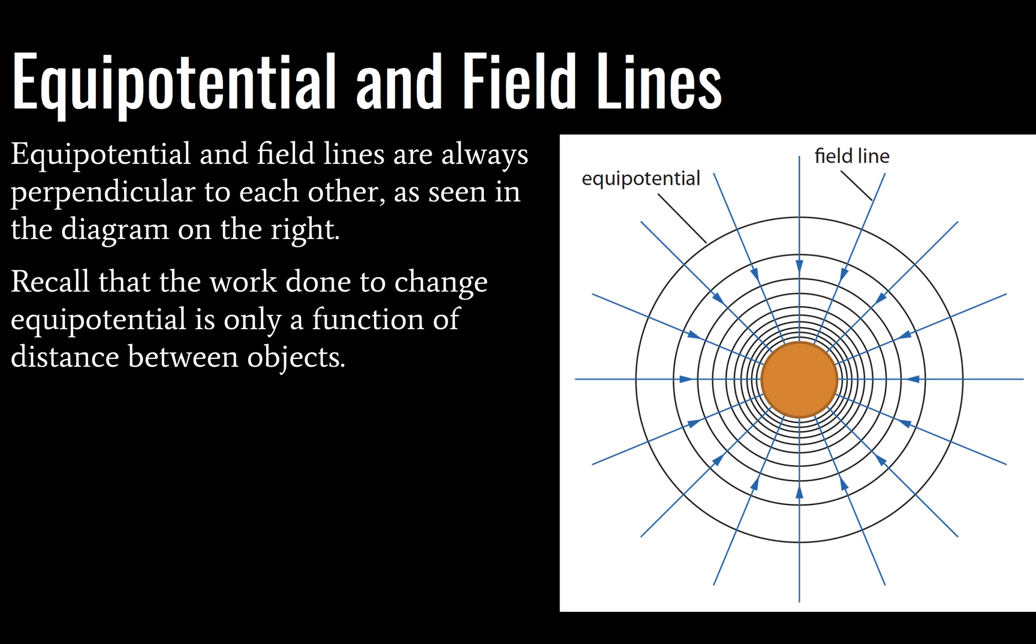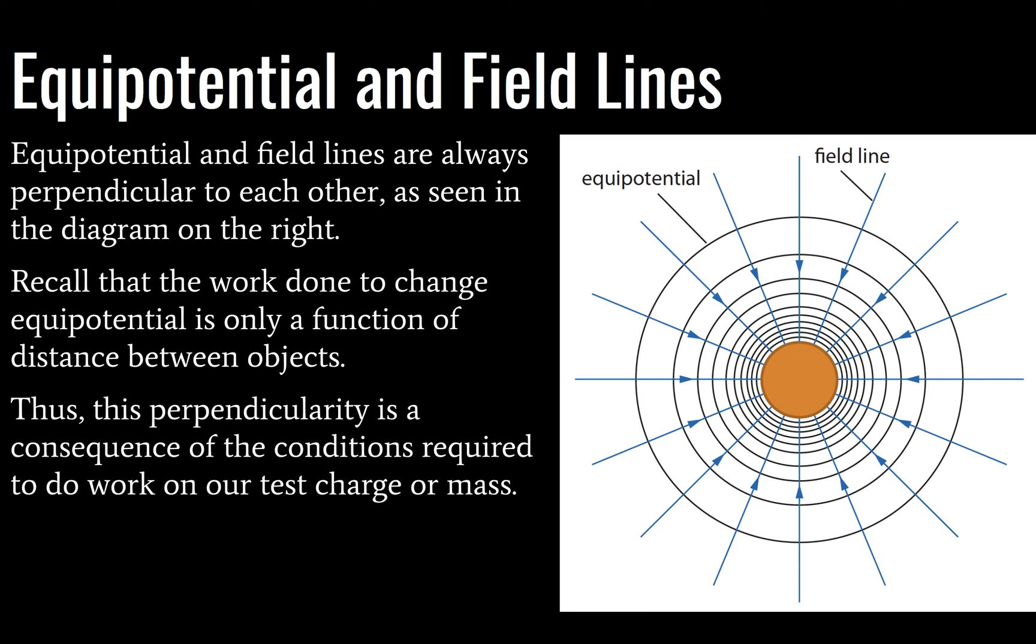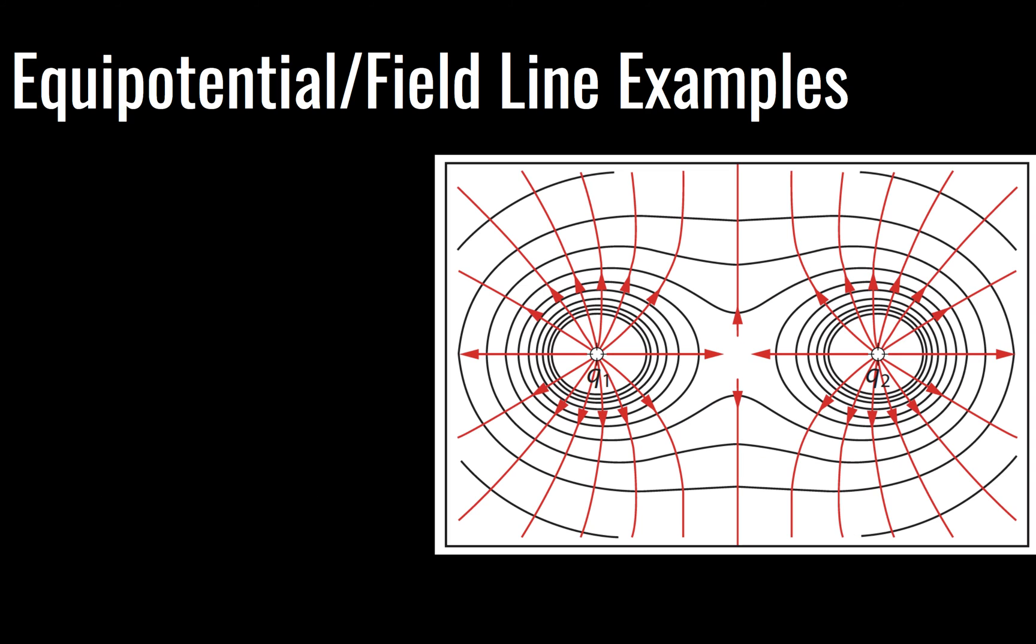So recall that the work done to change equipotential is a function of the distance between the objects—your test object, whether it's a test mass or a test charge, and the body whose field strength you're attempting to measure. So perpendicularity is just a consequence of the conditions that are required to do work on the test charge. Path doesn't matter. It is strictly a function of radius. If you want a more detailed explanation of what's going on here, crack a book.